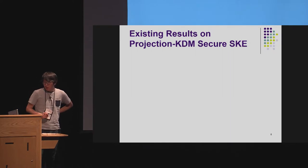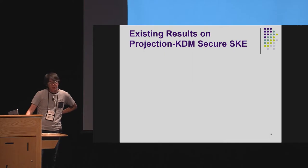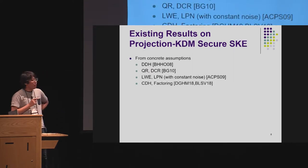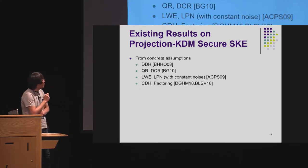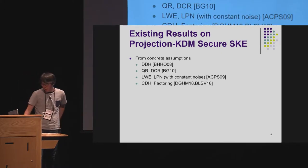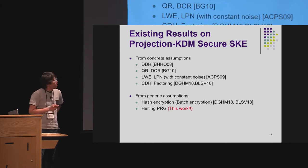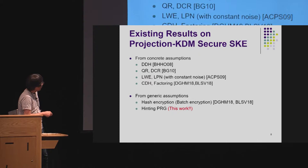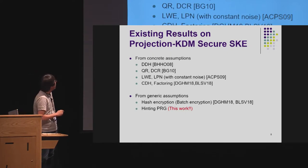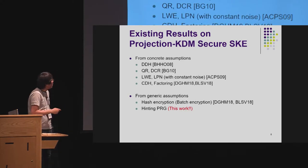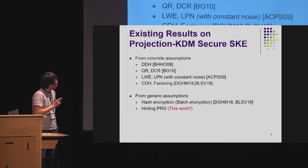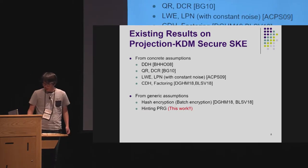Let me briefly recall what is known about projection-KDM-secure SKE. We have constructions from concrete number-theoretic assumptions such as DDH, QR, DCR, LPN, LWE, CDH, and factoring. We also have constructions from general assumptions from the recent result by Döttling and Brakherski — we can construct it from hash encryption or batch encryption, which are essentially the same primitive. In our work, we also show that projection-KDM-secure SKE, or even KDM-secure SKE with respect to all circuits of bounded size, can be constructed only from a hinting PRG. So as an assumption, projection-KDM-secure SKE is equivalent to or weaker than hinting PRG, and the converse direction is not known.